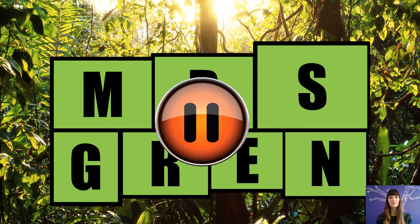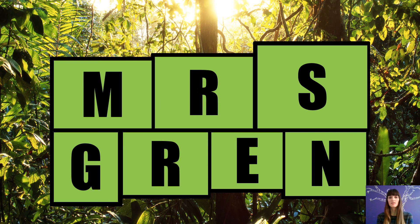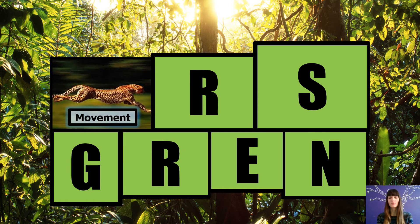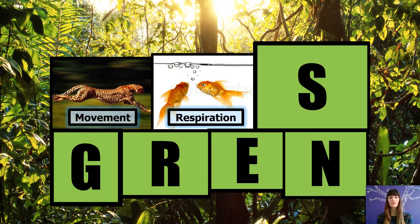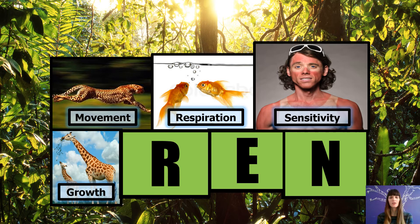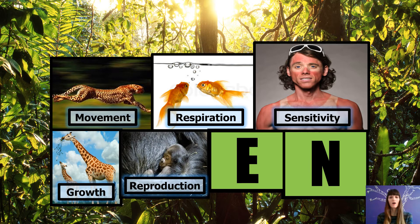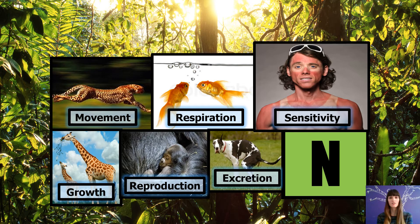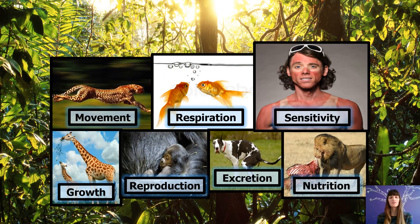I'm sure some of you didn't pause it but hopefully most of you did. Let's go through the answers. So for M, it's movement. R, respiration. S, sensitivity. G, growth. R, reproduction. E, excretion. And N is nutrition. They are the seven life processes whether it's an animal or a plant — anything that is living will do all seven of these processes.